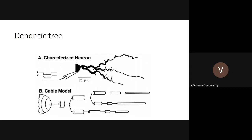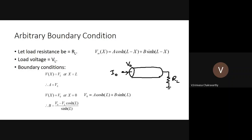The three boundary conditions are: sealed end, killed end, and the arbitrary case where the far end has a loading resistance R_L. In the sealed case current is zero; in the killed case voltage is zero. The third case is the most general: voltage and current at the far end are both finite and don't go to zero. When you inject a DC current I_0, we need to find the steady state distribution of voltage along the cable.